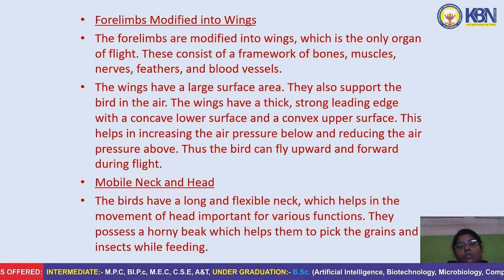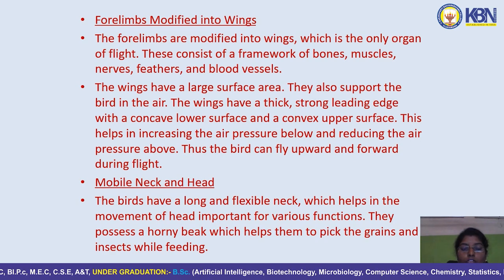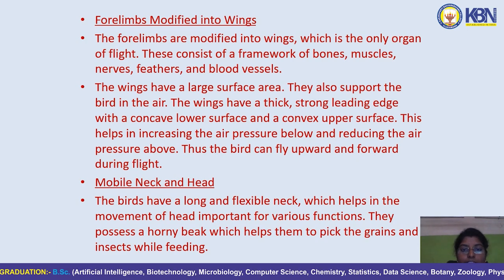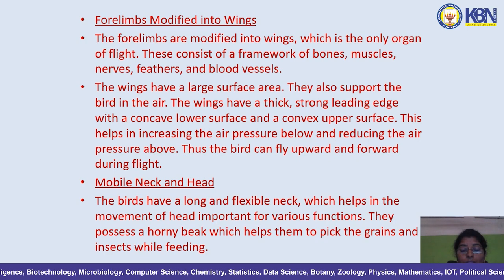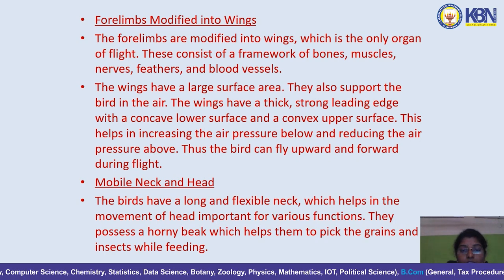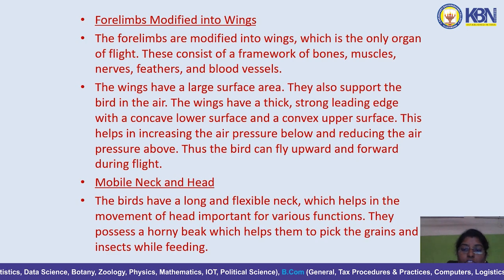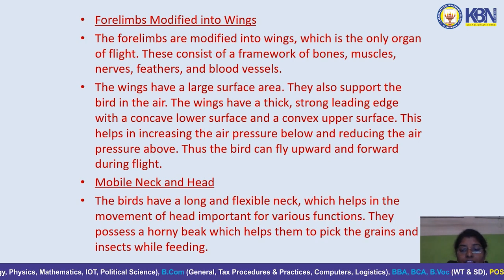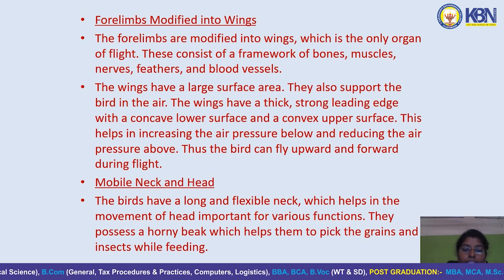The forelimbs are modified into wings, which are the only organ of flight. They consist of a framework of bones, muscles, nerves, feathers, and blood vessels. The wings have a large surface area and support the bird in the air. The wings have a thick, strong leading edge with a concave lower surface and a convex upper surface, which increases air pressure below and reduces air pressure above, allowing the bird to fly upward and forward during flight.